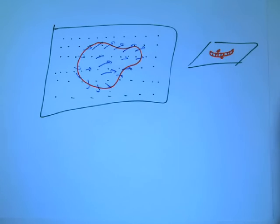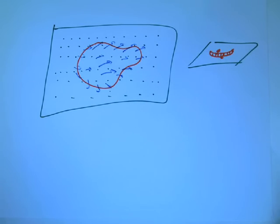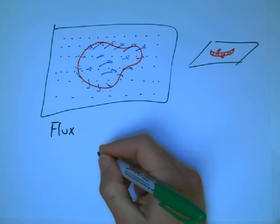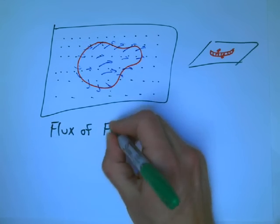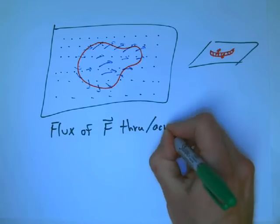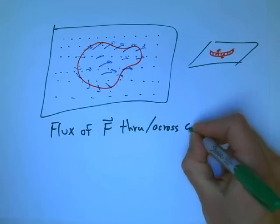And so, that's called the flux, just a Latin word for flow. The flux of a vector field F through, or you even say across is a good word, a curve C in the plane.